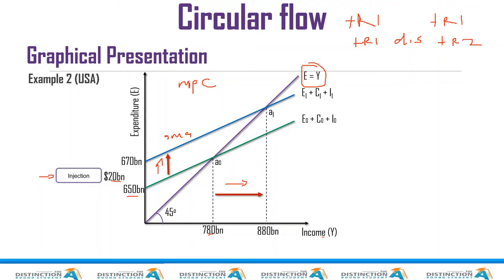So the MPC, remember in this example it was 0.8. So it was K is equal to 1 over 1 minus MPC, which is K is equal to 1 over 1 minus 0.8. So K is equal to 1 over—what is 1 minus 0.8?—is 0.2. Then how many times does 0.2 go into 1? Let's count: 0.2, 0.4, 0.6, 0.8, 1. So it goes five times.